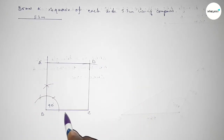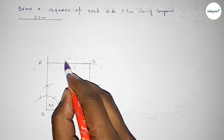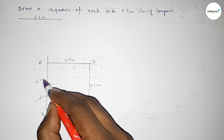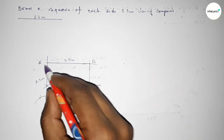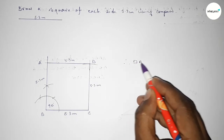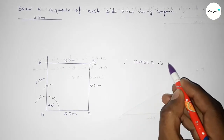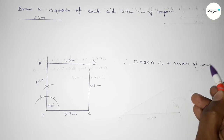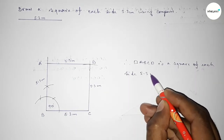We label the vertices: point A and point D. This side is 5.3 cm, this side is 5.3 cm, this side is 5.3 cm, and this side is also 5.3 cm. Therefore, ABCD is a square of each side 5.3 centimeters.